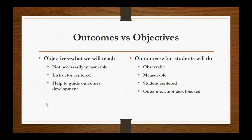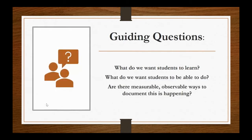Guiding questions as we start looking at developing any outcome, whether at program or course level: What do we want the student to learn as a result of the course? What do we want them to be able to do as a result? And are there measurable and observable ways for that to happen? That's the key — when it comes to making an outcome, we have to make sure we can see it happen, observe it, and measure it.